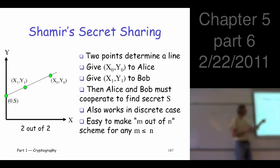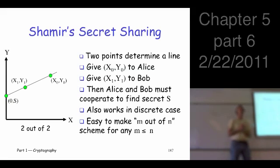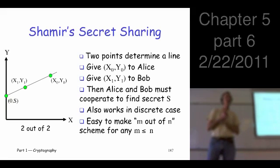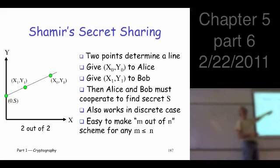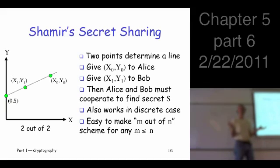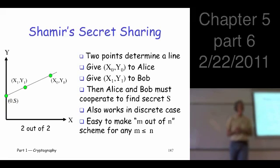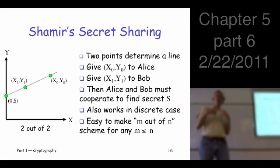But individually - if you're Alice, with just your point, what do you know about the secret value S? Nothing, absolutely nothing. Why is that? Because there's an infinite number of lines that go through that point. Any slope - you can get any point on the Y axis by choosing the appropriate line. There's not even an exhaustive search you can do here. You have no information about that point S. But when two people get together, you can determine it easily, just trivially.